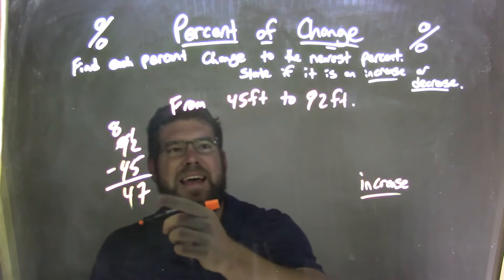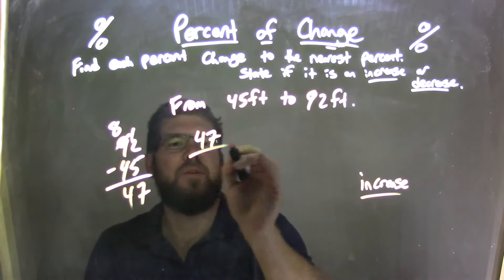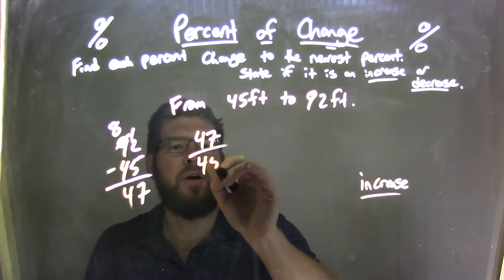So we have 47. We take that number, 47, and we divide it by our first number, 45.